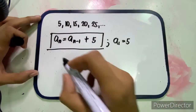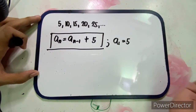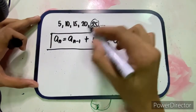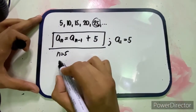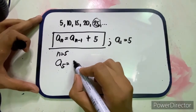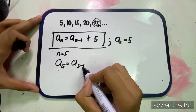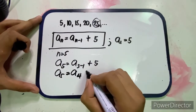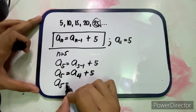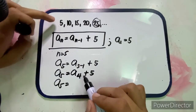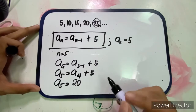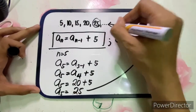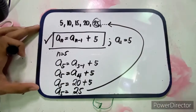Let's check by finding the fifth term, which should be 25. With n equal to 5, a sub 5 equals a sub (5 minus 1) plus 5, which is a sub 4 plus 5. The fourth term is 20, so 20 plus 5 gives us a sub 5 equals 25. Since this matches, our recursive formula is correct.